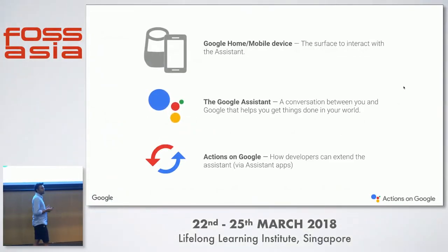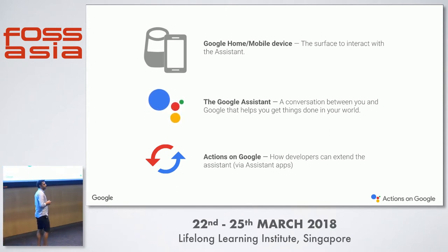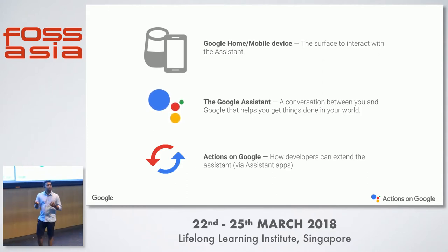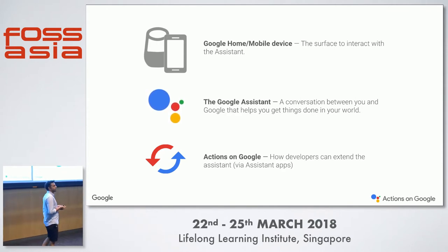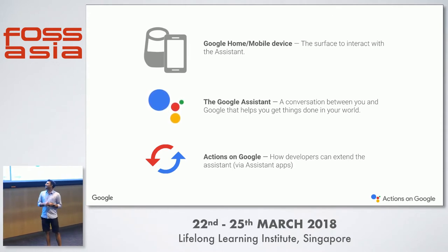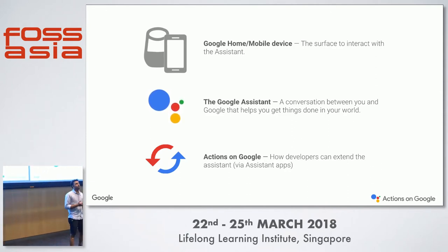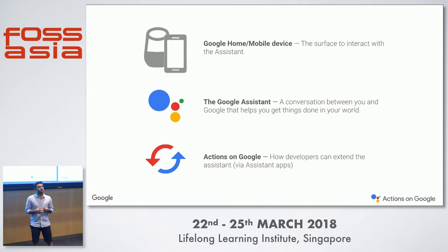So what did we just see? We saw a few devices, a few actions provoked by users, and a few apps like Netflix came into play. Let's separate the different components. First, we have the devices — such as Google Home, Android phones, iPhones, stereos, and cars. We call them 'surfaces' because they don't necessarily have the same screens or the same input methodologies that our phones currently have.